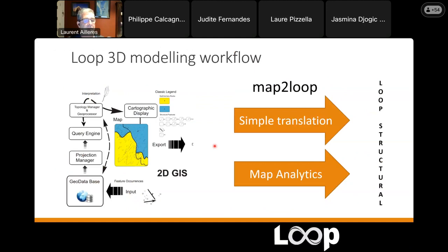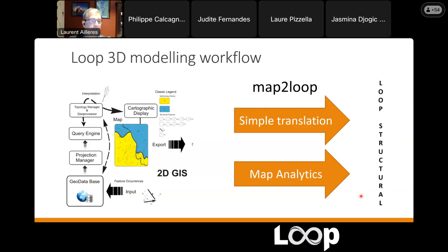So what we've developed are two main libraries. We've developed other libraries that do some other things, but the main ones are Map2Loop — a library doing automated analysis of geological maps — and then Loop Structural, which is our modeling engine. The workflow is that geological surveys serve data, and most of them do.